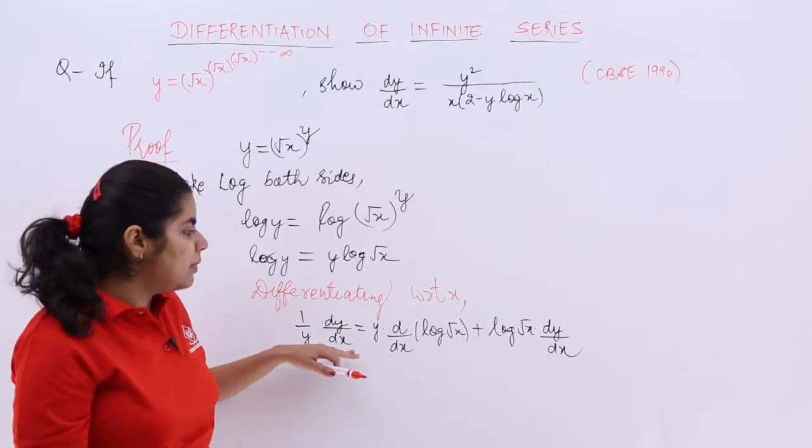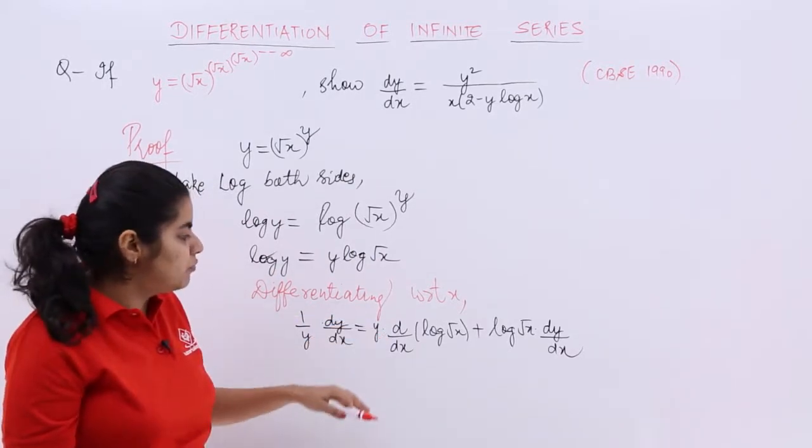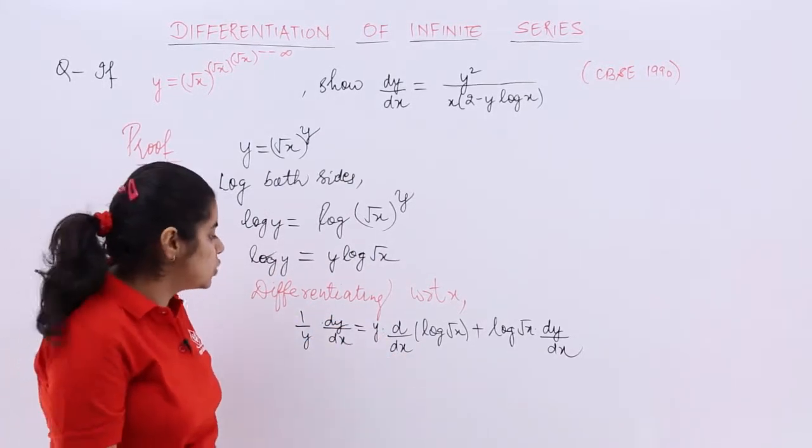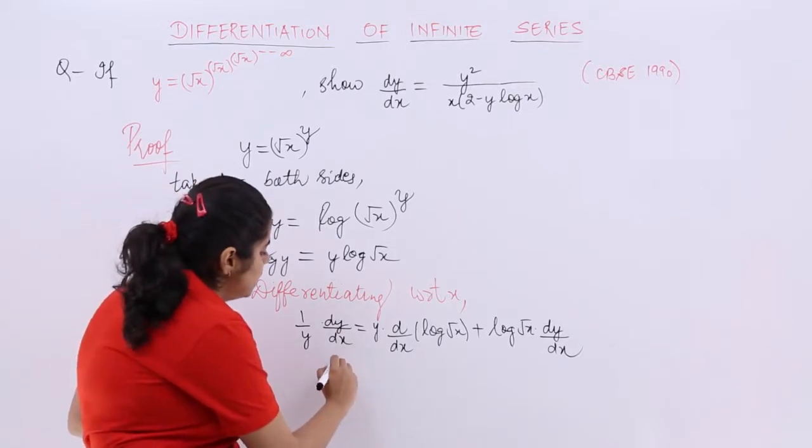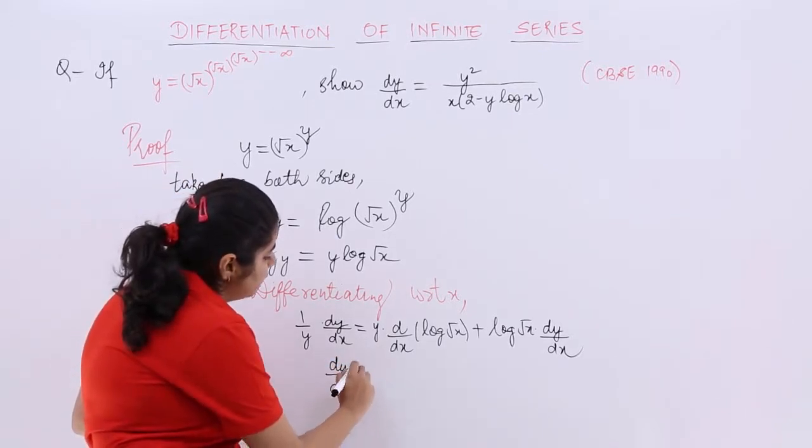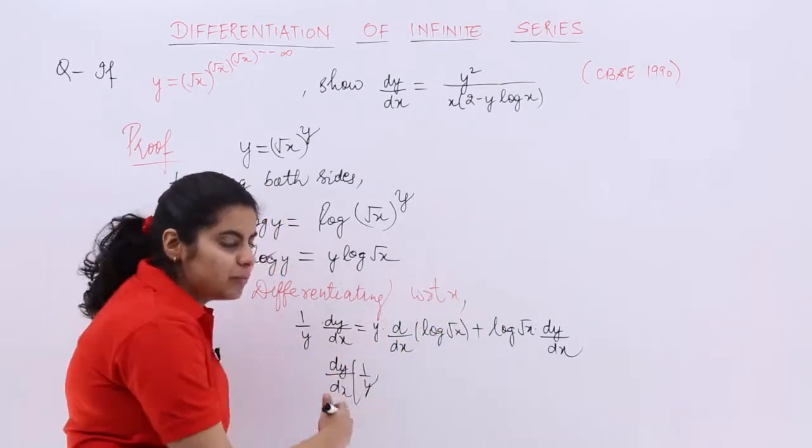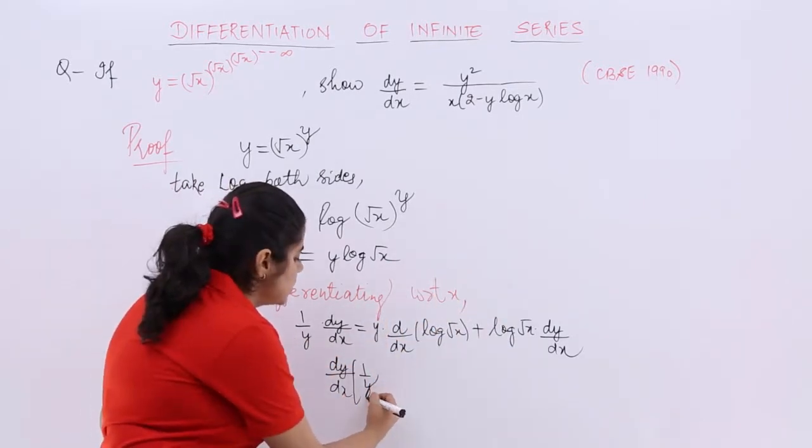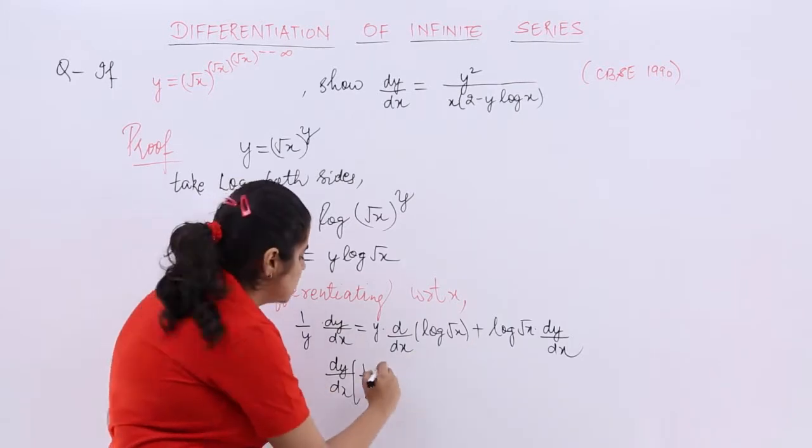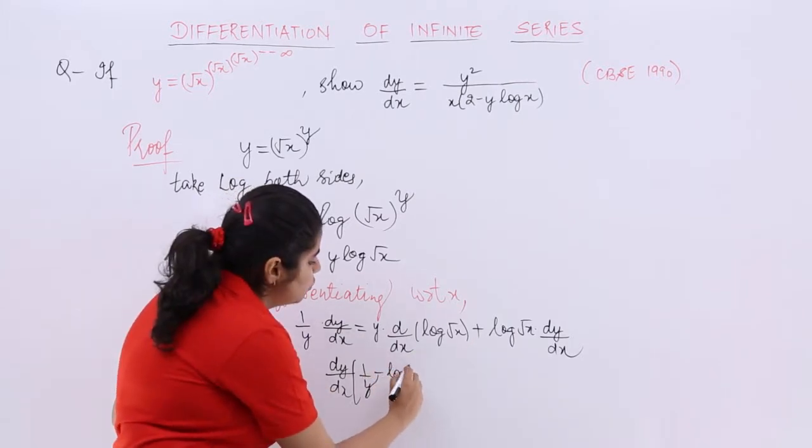Next step is what? 1 by y dy by dx here. y is here and some things need to be solved. So let me write dy by dx. 1 by y is here.